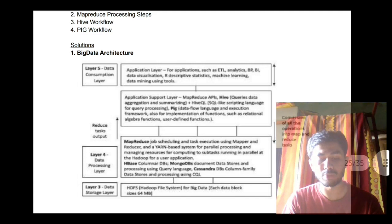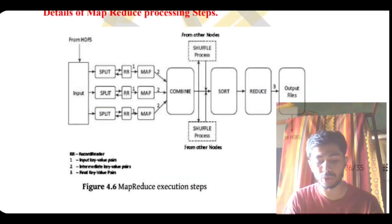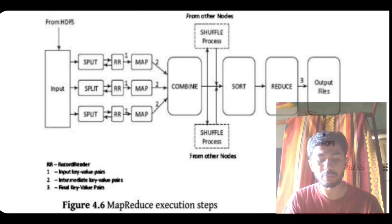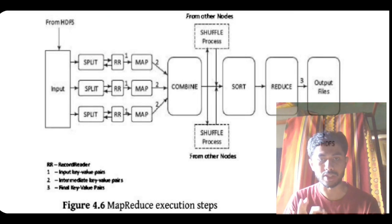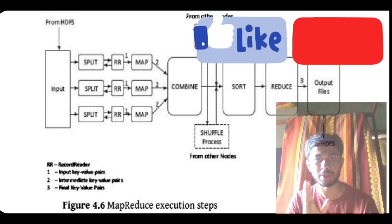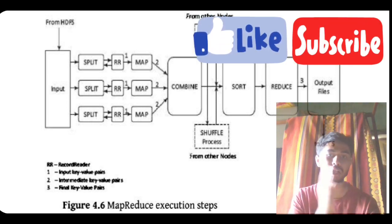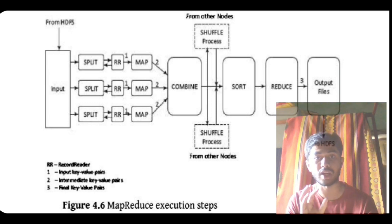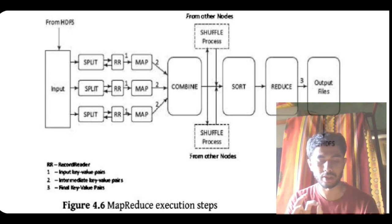The next question is the MapReduce processing steps — a super important question. I have not included pre-written content here because you have to understand this and write in your own words. MapReduce means you are mapping it and reducing it, but it's not just a two-step process. There are many steps before, after, and in between — it is defined in detail. You have to focus on it and use bullet points to write these points.